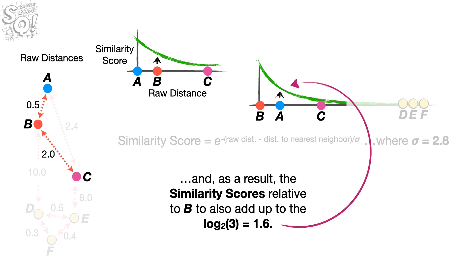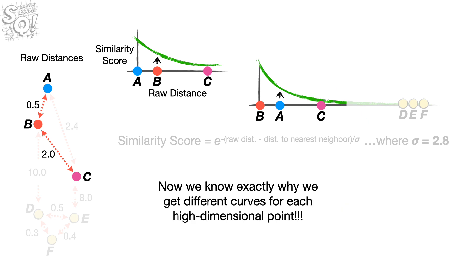When we calculate similarity scores relative to point B, because B is closer to C than A is, we need to reduce sigma to 2.8. And that results in a slightly different curve. And as a result, the similarity scores relative to B also add up to the log base 2 of 3, which equals 1.6. Now we know exactly why we get different curves for each high-dimensional point.